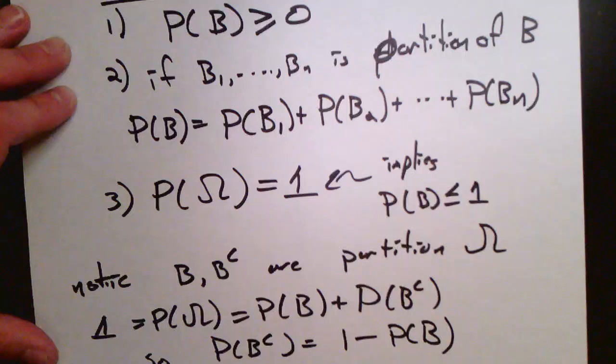Rearranging this, we see that the probability of b complement equals 1 minus the probability of b. This is a simple consequence of our basic assumptions about the probability P, and it will be very useful in what comes later.